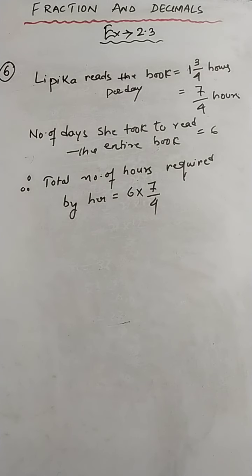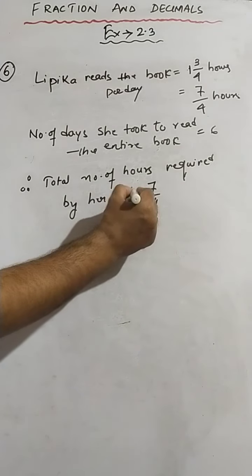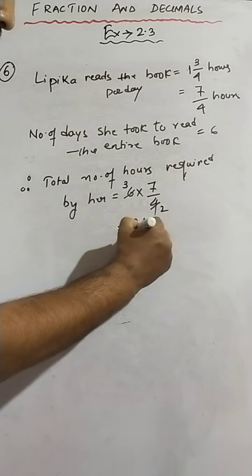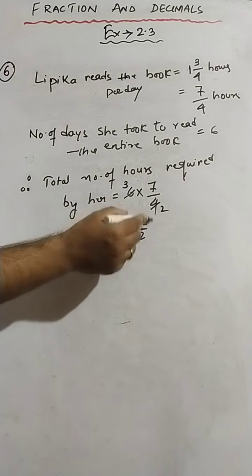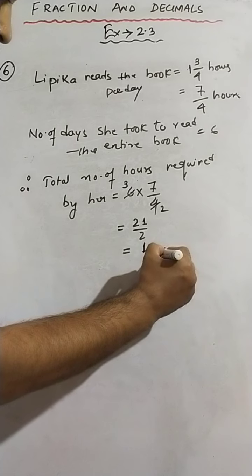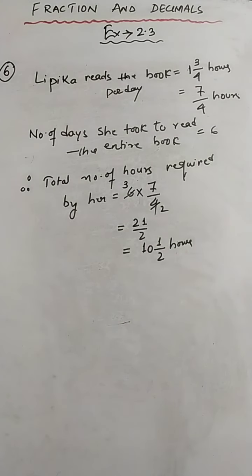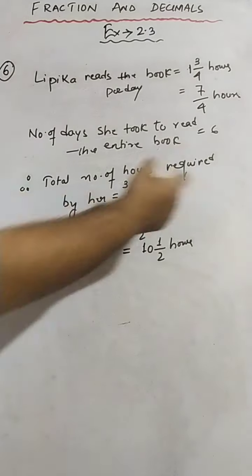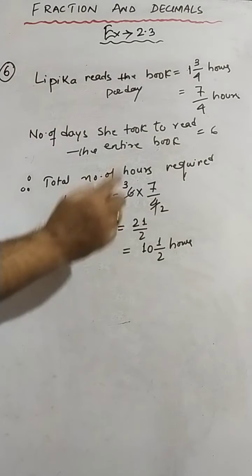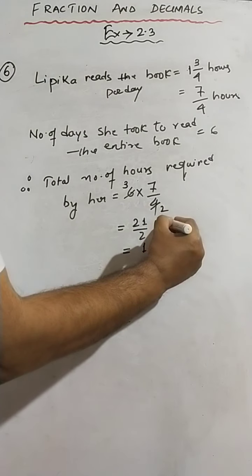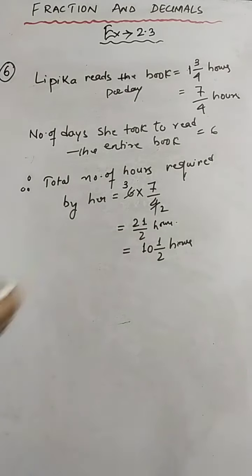Now reduce the values: six and four can be reduced by two, giving two threes and two twos. So the answer is twenty-one by two, and in mixed fraction form that is ten and one-half hours. That is how many hours she took to read the complete book.